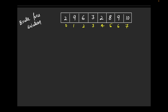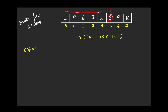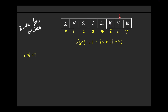One thing is for sure — I have to consider the first element, so the counter is initialized to one. I will start with the second element and go till the last, doing i++. For each position i, I will use a second pointer j equals i-1, going from i-1 down to 0, checking if the current element is greater than all elements to its left.